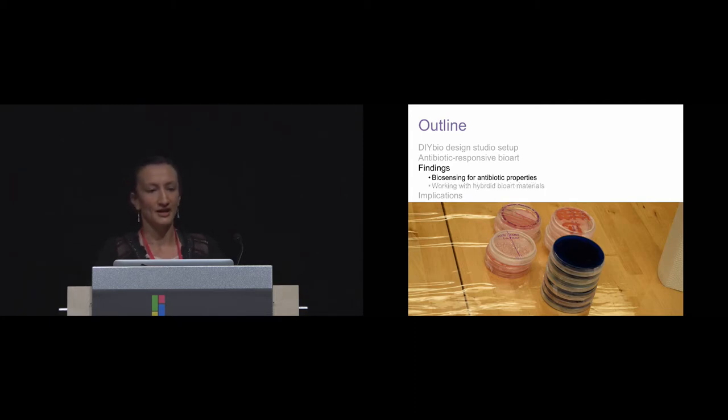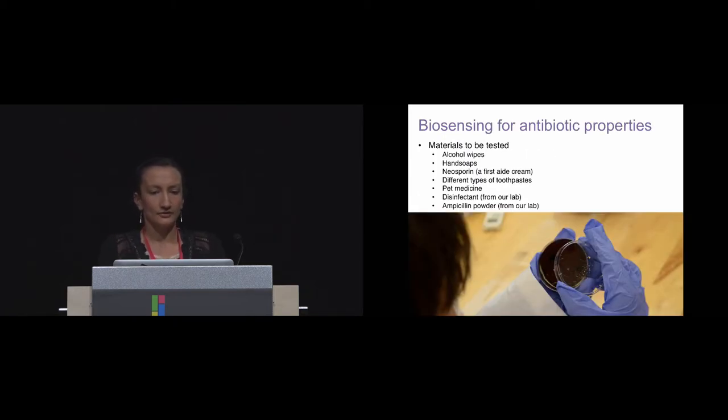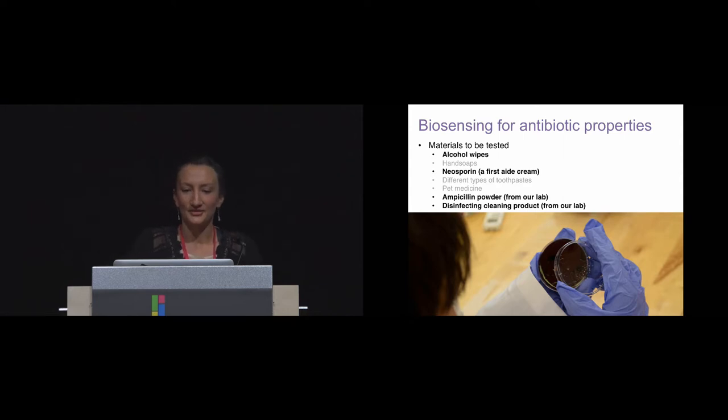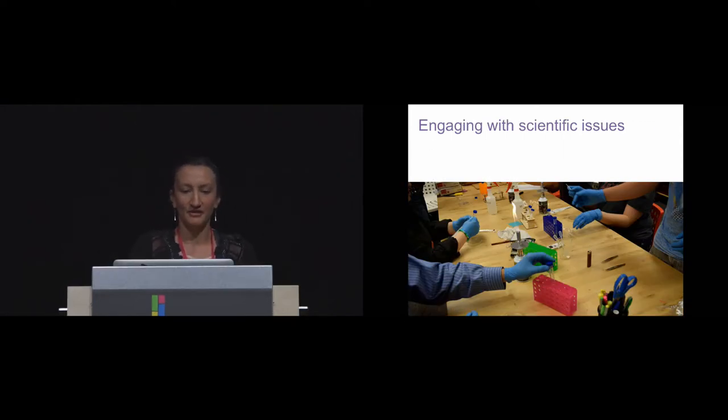The first finding that I'll talk about is the biosensing for antibiotic properties. First of all, the students brought in a range of really different materials to test for antibiotic properties in the class. And these included hand soaps, pet medicine, disinfectants, and Neosporin, which is a first aid cream. And in a very exciting turn of events, some of these did have antibiotic properties as shown by our tests and the students. And also the researchers were very excited to see these results in our course.